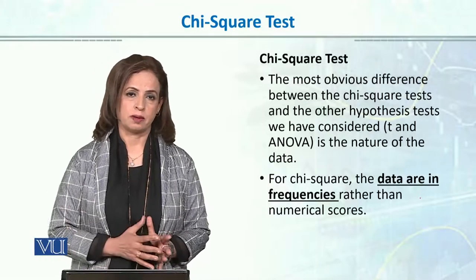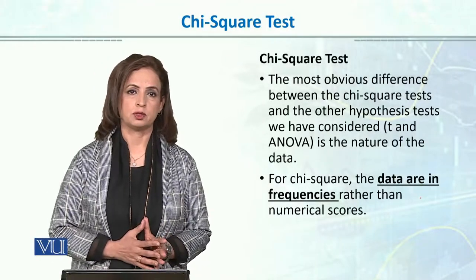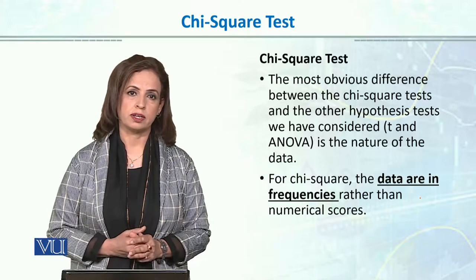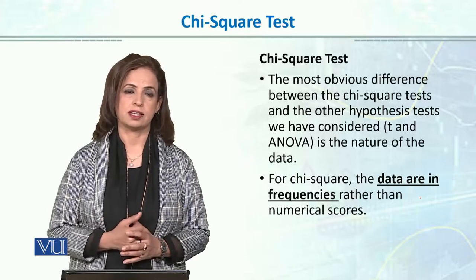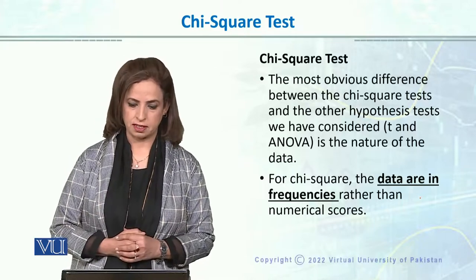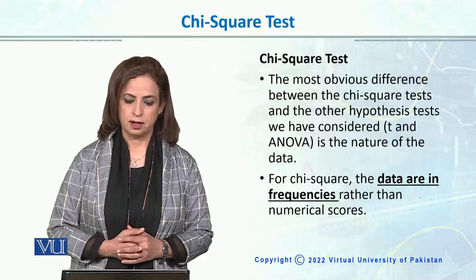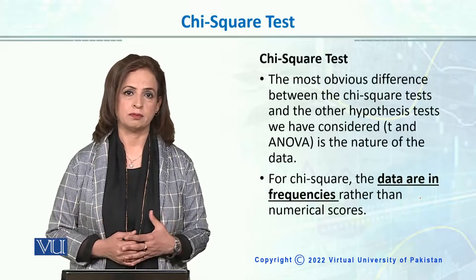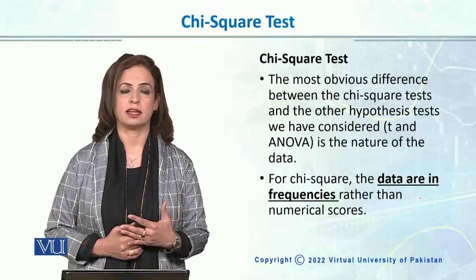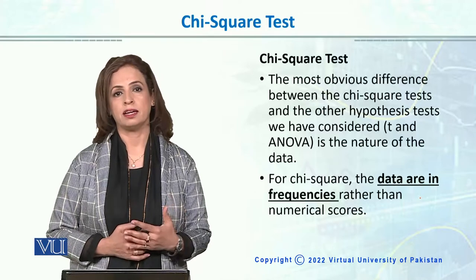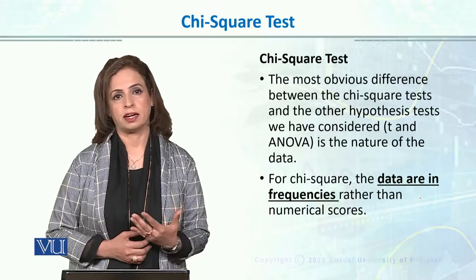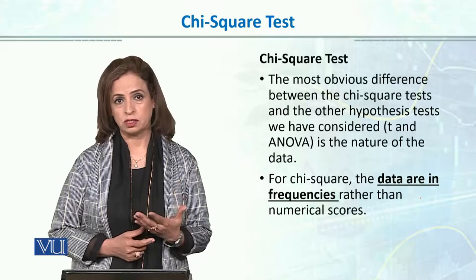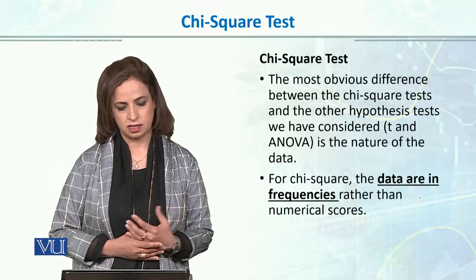The first non-parametric test I'll be talking about is chi-square, which is very frequently used in social sciences and in psychology in particular. We have two kinds of chi-squares, but chi-square is mainly used when our data is in frequencies or on the nominal or ordinal scale.